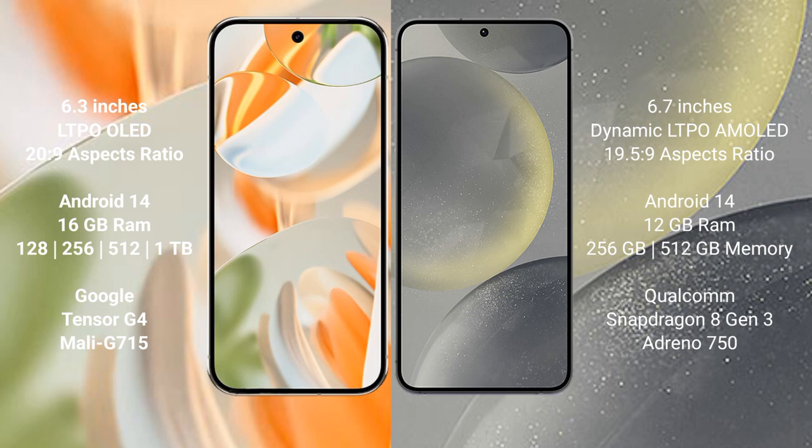Google Pixel 9 Pro runs on the Android 14 operating system, comes with 16GB RAM and 256GB or 512GB internal storage, and is powered by the Google Tensor G4 processor with GPU model G715. Samsung Galaxy S24 Plus runs on Android 14, comes with 12GB RAM and 256GB or 512GB storage, and uses the Qualcomm Snapdragon 8 Gen processor with Adreno 750 GPU.